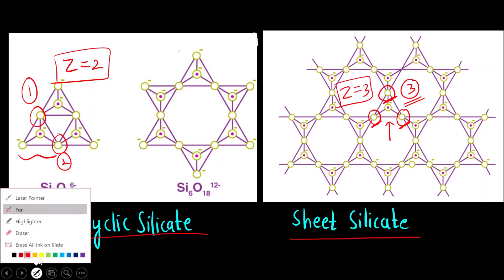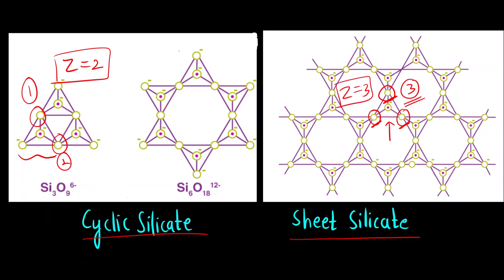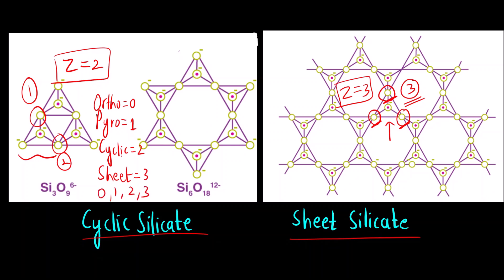So the correct answers are: for orthosilicate Z = 0, for pyrosilicate Z = 1, for cyclic silicate Z = 2, and for sheet silicate Z = 3. I hope you have understood all the solutions in this video. We will discuss some more questions based on physical chemistry once we get the question paper. Thank you so much.